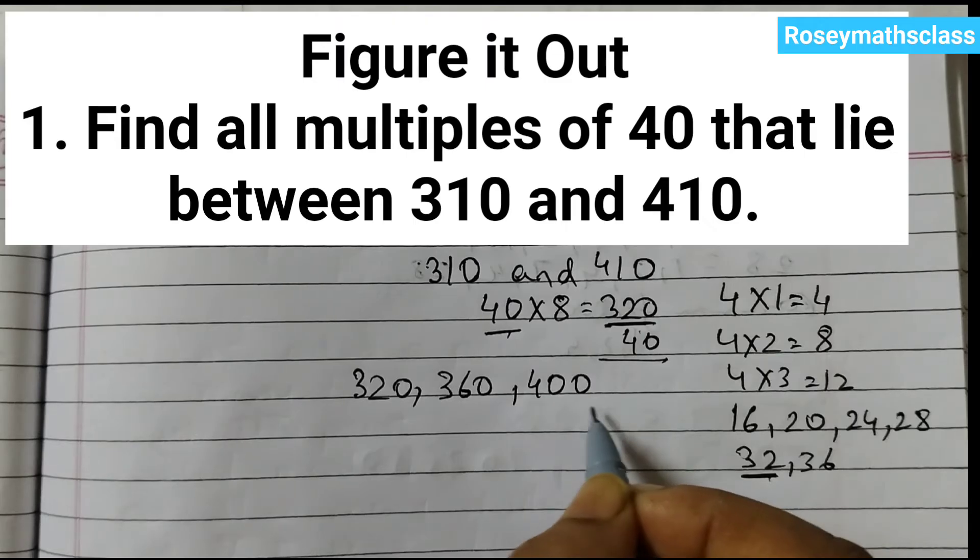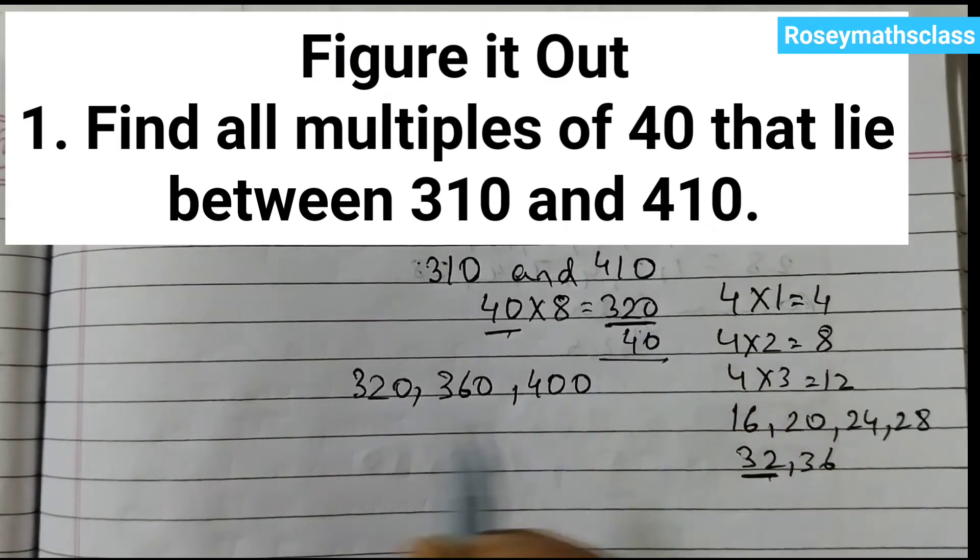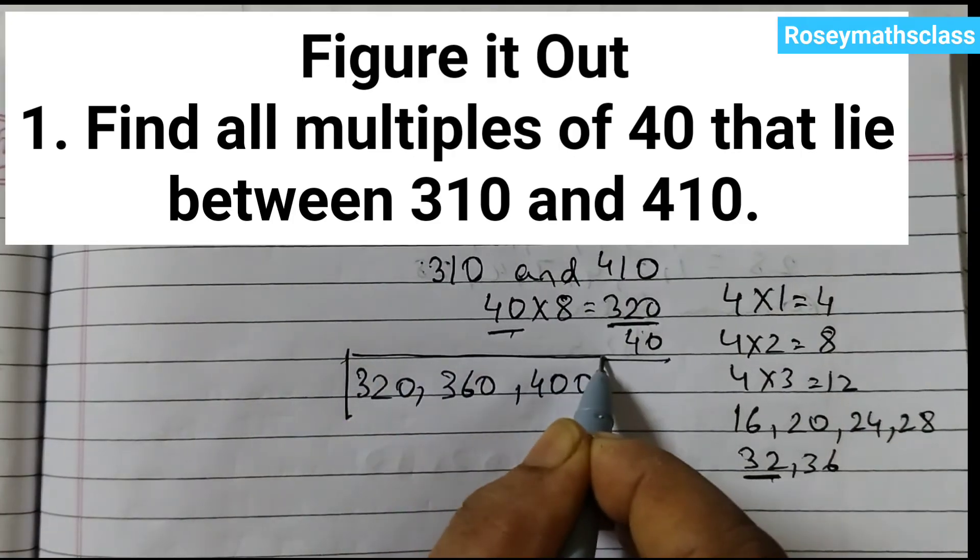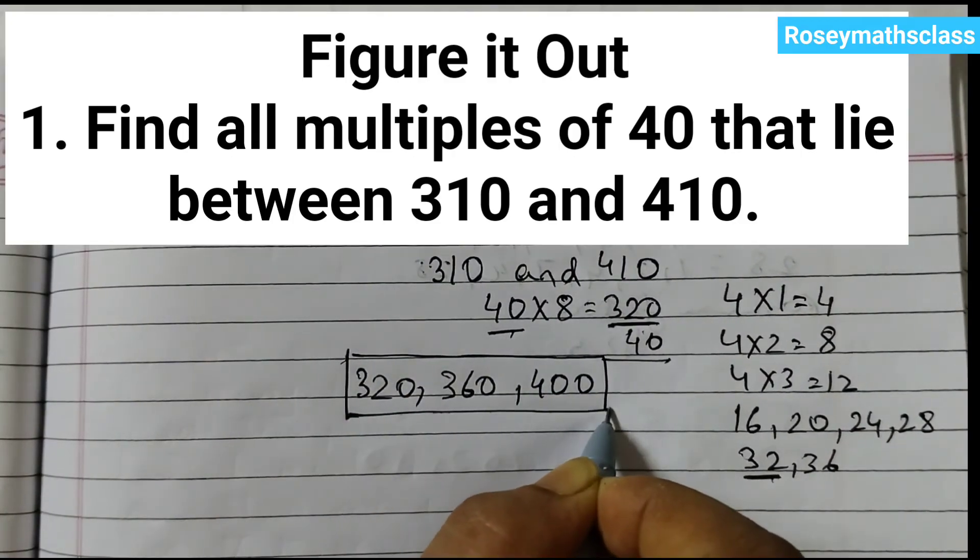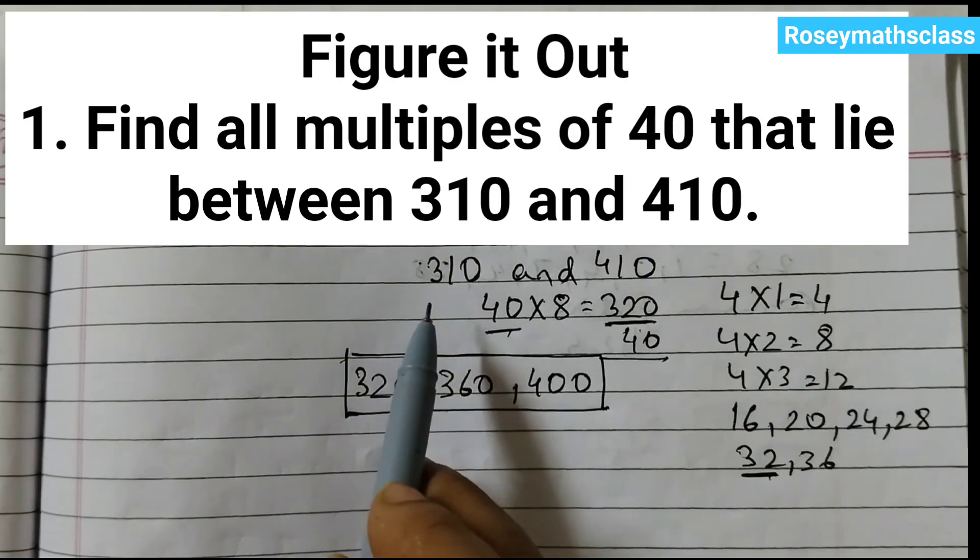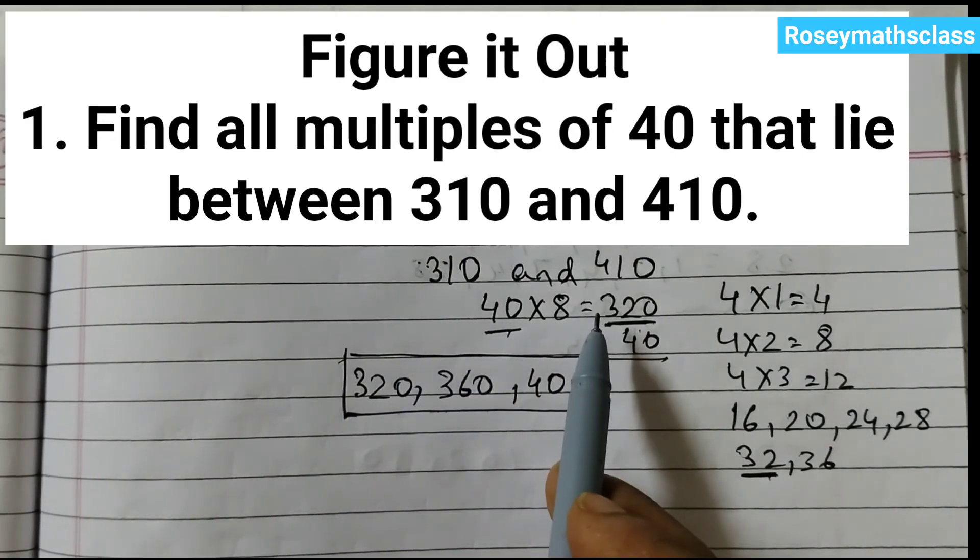And if I add 40, it will be more than 410. So the answer is 320, 360 and 400. These are all the multiples of 40 that lie between 310 and 410.